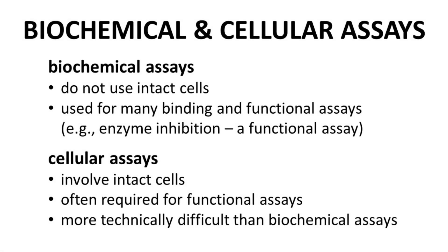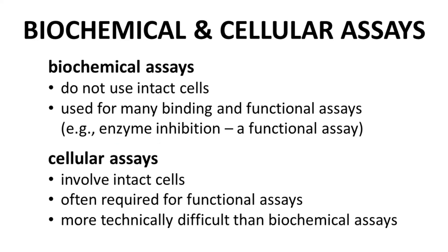Early assays in drug discovery are also often divided between biochemical and cellular assays. Biochemical assays do not rely on intact cells for measuring a compound's activity. Biochemical assays include most binding assays and some simple functional assays, for example, enzyme inhibition assays. Cellular assays require intact cells for the assay — for example, if you are monitoring the action of a compound on a membrane-bound receptor, then you will very likely need a cellular assay.